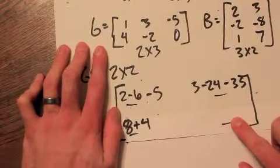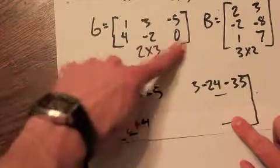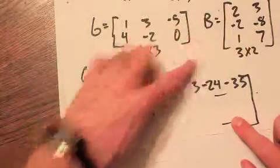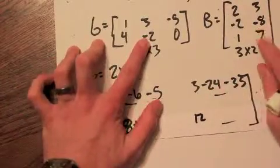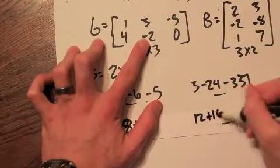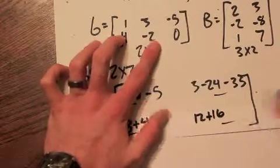Then move over. Second row, second column. So first times first, 4 times 3 is 12. Negative 2 times negative 8 is positive 16. And 0 times 7 is still 0.